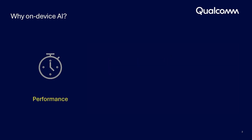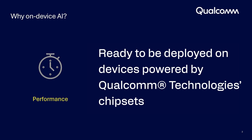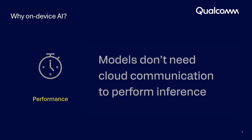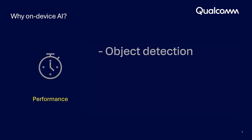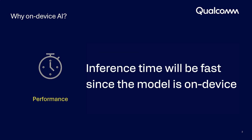In addition to privacy, the second benefit is performance. Our state-of-the-art machine learning models are optimized for performance and are ready to be deployed on devices powered by Qualcomm Technologies chipsets. For a model to run, it doesn't have to communicate with the cloud to perform inference, whether it's for object detection, image segmentation, text to speech, or whatever AI application you want to deploy. Since the model is on-device, the inference time is fast.